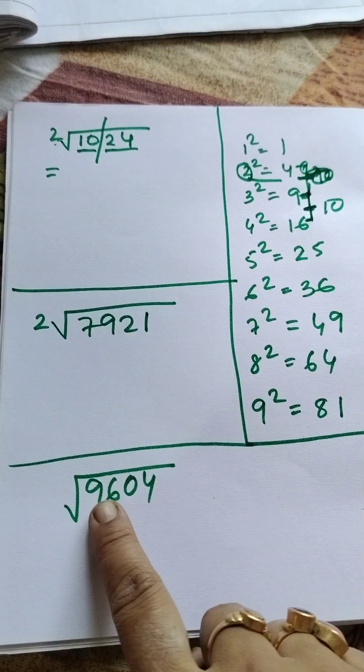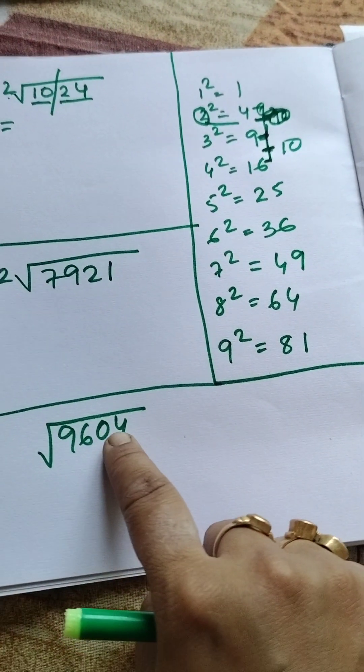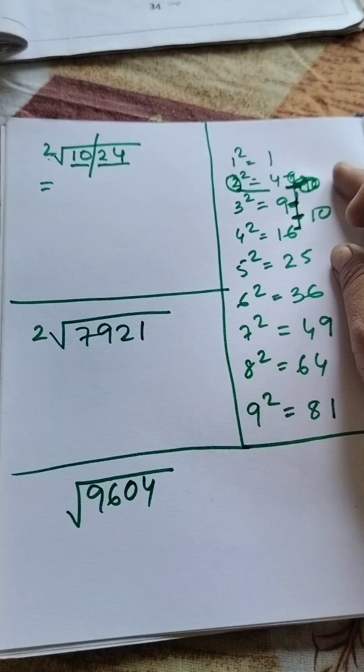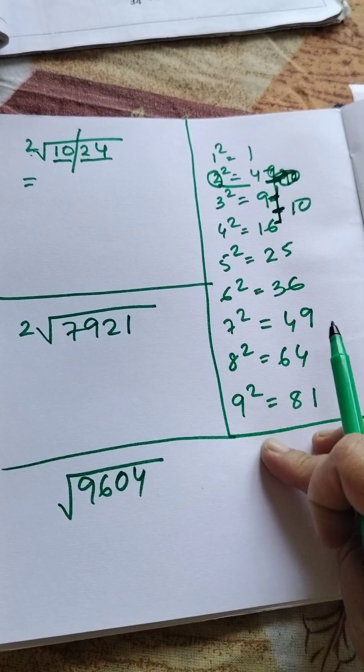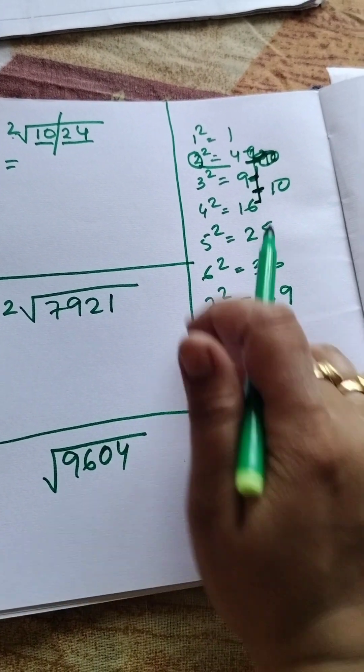Today's topic is finding the square root of any numbers. At first, you have to write down the squares 1 to 9 on the right-hand side.